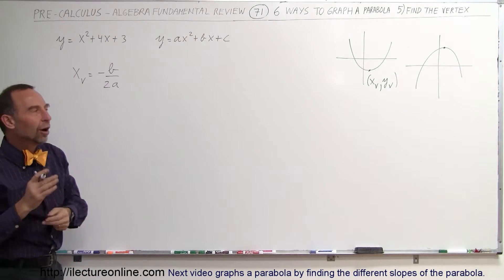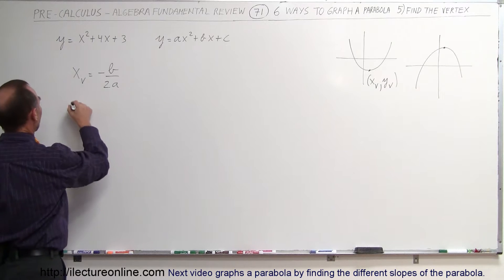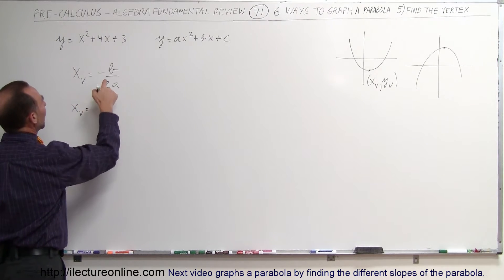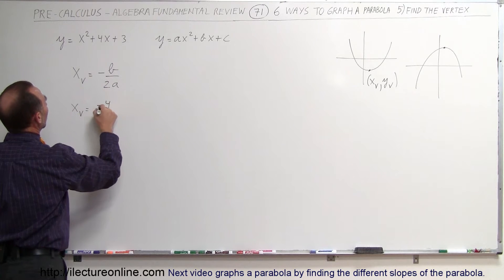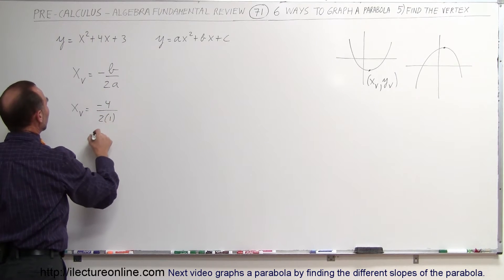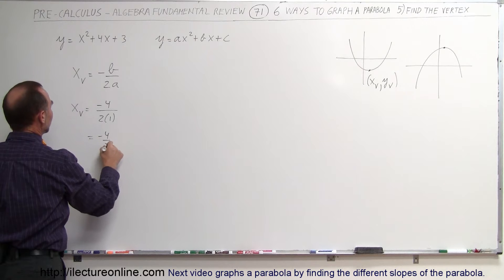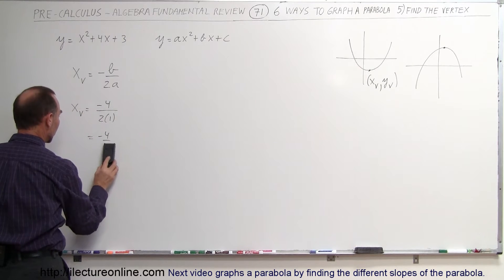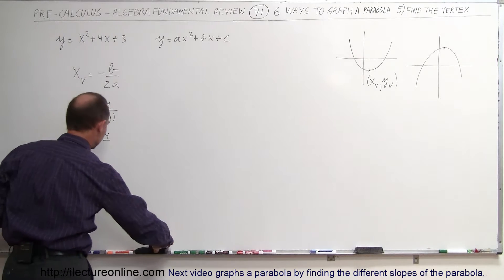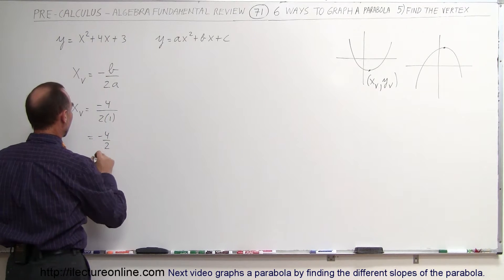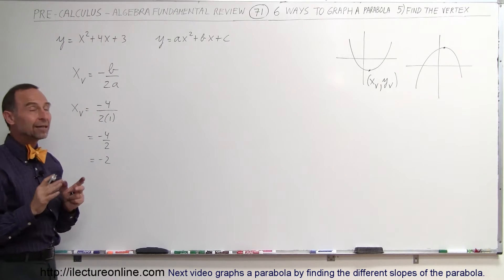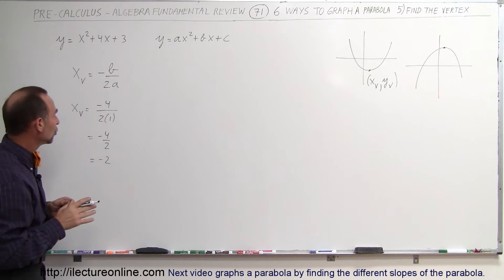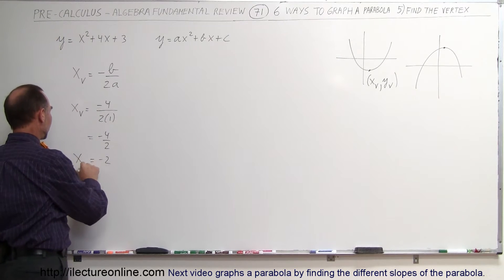Alright, so x sub v is equal to minus b, that would be minus 4 divided by 2 times 1, which is equal to minus 4 divided by 2. There we go. And so that's equal to minus 2. So the x-coordinate of the vertex is minus 2, x sub v.